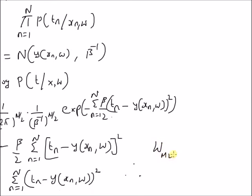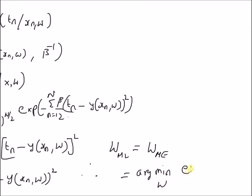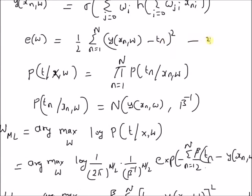Therefore, w_ML — the weights calculated by maximizing the log likelihood function — is equivalent to the weights calculated by minimizing the error function, w_min_MSE, which is the argument that minimizes E of W. So for an artificial neural network, when the target values are independent and identically distributed, the optimal weights are the same whether we maximize the likelihood function of the target values or minimize the error function between target values and the outputs of the neural network.